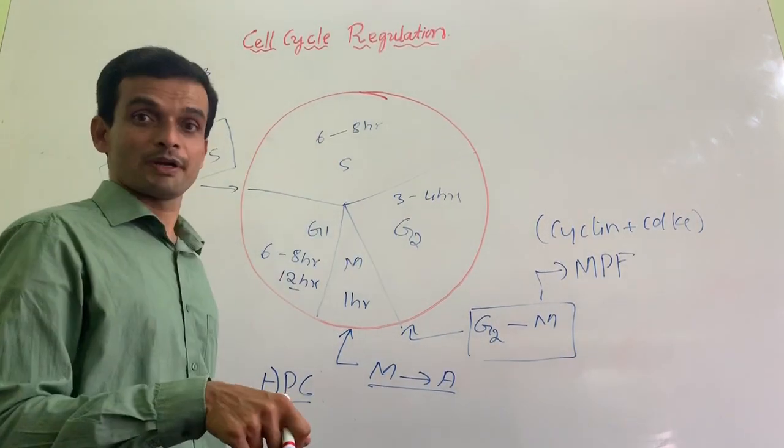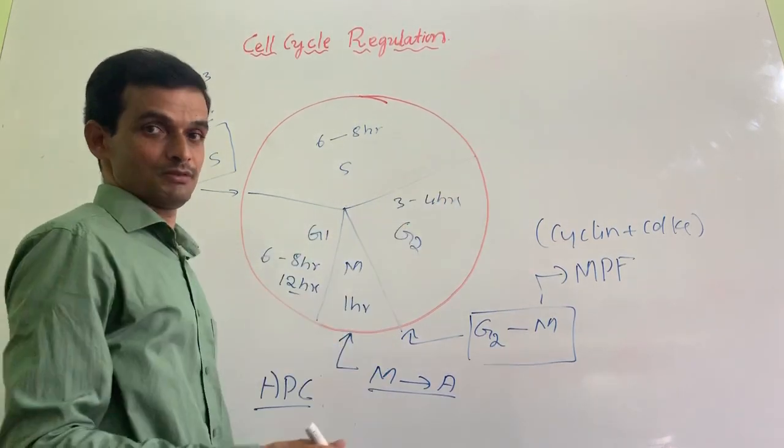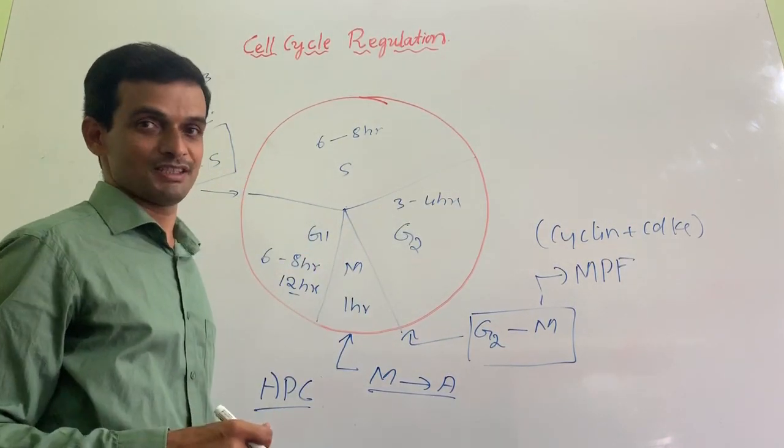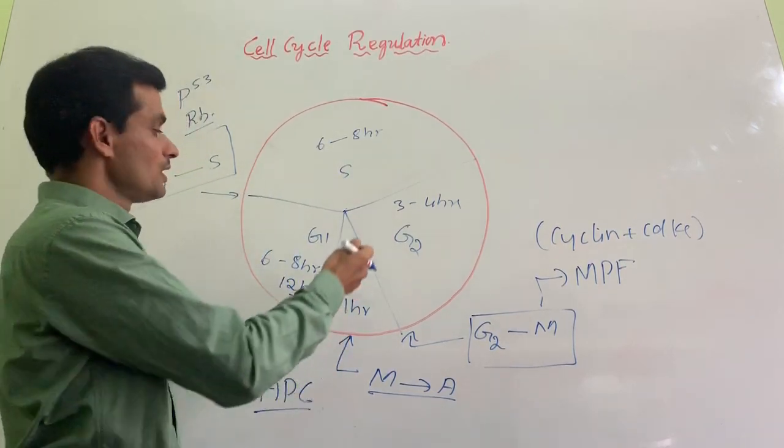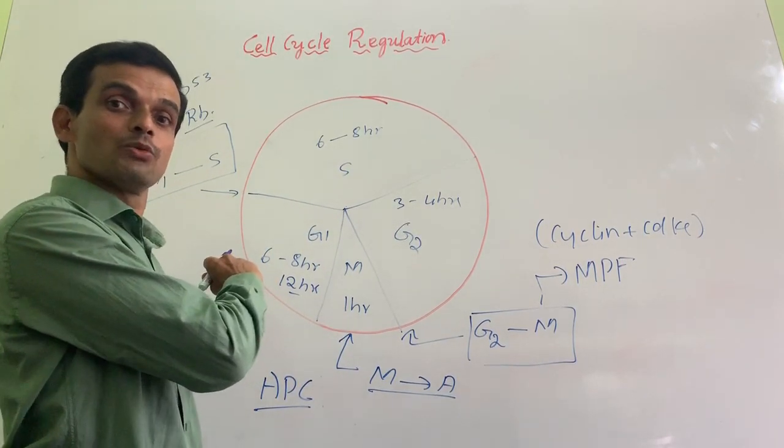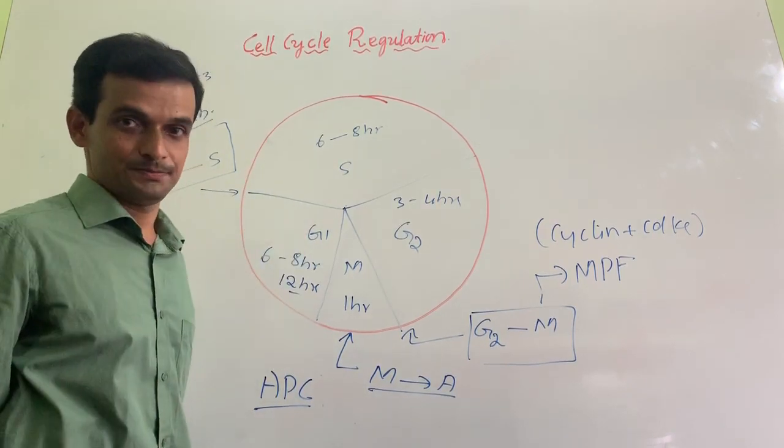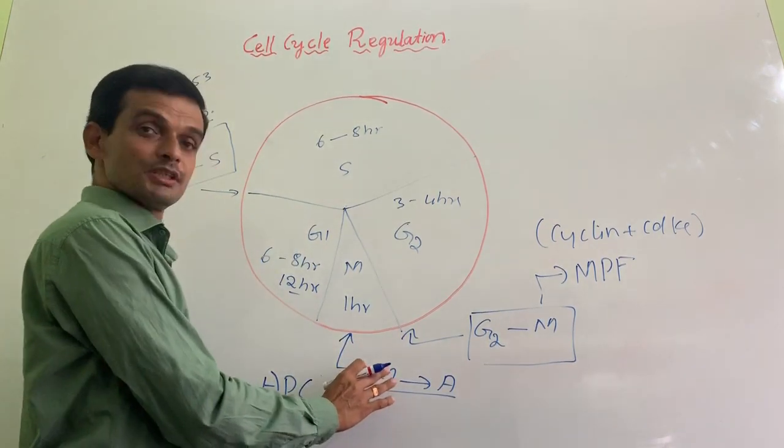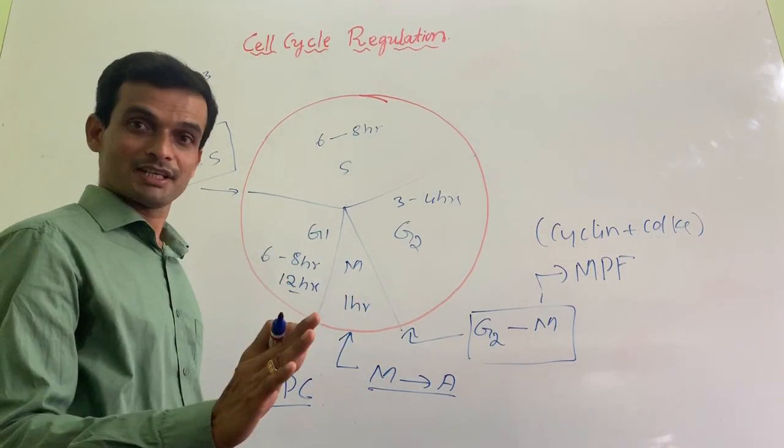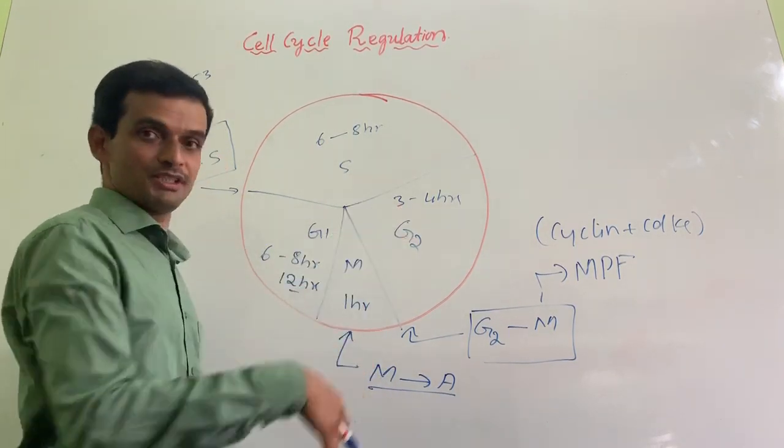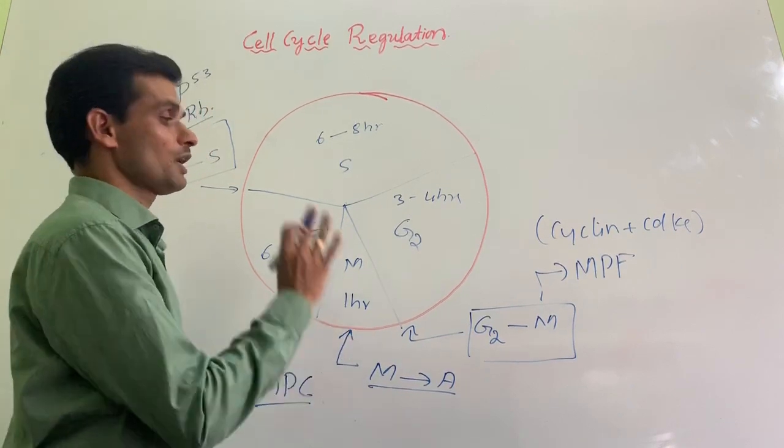If this checkpoint fails to operate, then it leads to plus or minus one. You study that in Principles of Inheritance. It is called aneuploidy. One daughter cell will have an extra chromosome, while the other cell will have only n minus one condition. Therefore, this checkpoint is responsible for normal segregation of chromatids or chromosomes during the cell division cycle.